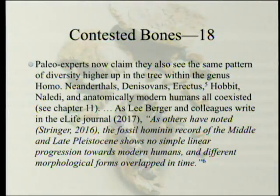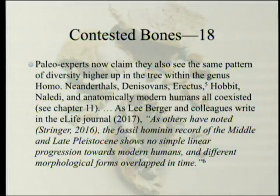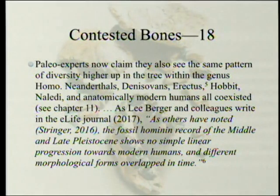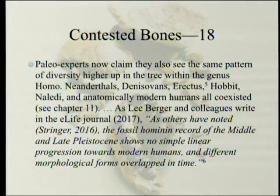Paleo experts now claim they also see the same pattern of diversity higher up in the tree within the genus Homo. Neanderthals, Denisovans, Erectus, Hobbit, Naledi, and anatomically modern humans all co-existed. As Lee Berger and colleagues write in the eLife Journal, quoting Stringer 2016: 'The fossil hominin record of the middle and late Pleistocene shows no simple linear progression toward modern humans, and different morphological forms overlapped in time.' What that means is that what you were taught about one semi-species following another in a simple linear progression was just flat-out wrong — and that's according to Lee Berger quoting Stringer.